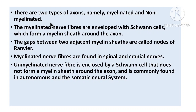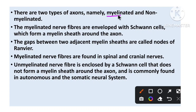In the axon, there are two types: myelinated and non-myelinated axons. Myelinated nerves are enveloped with Schwann cells, which form a myelin sheet around the axon. In non-myelinated axons, Schwann cells are absent — the myelin sheet does not form.